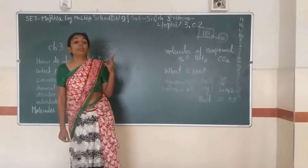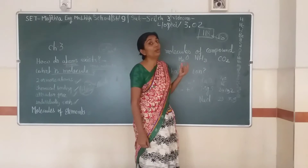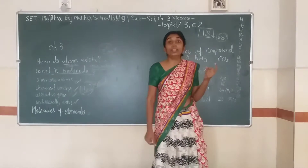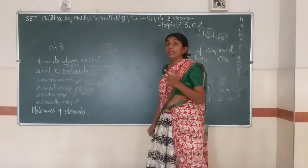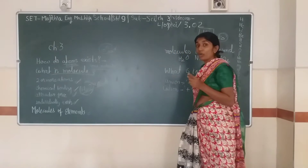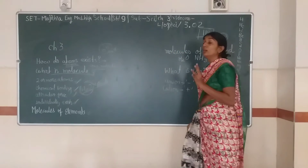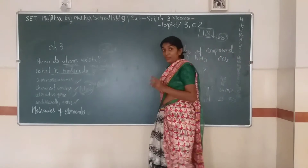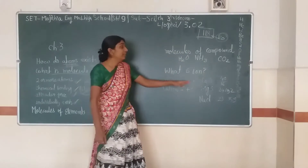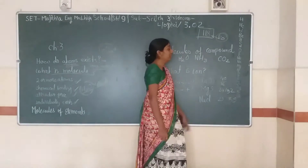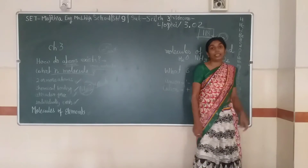The 20 elements are: 1) Hydrogen, 2) Helium, 3) Lithium, 4) Beryllium, 5) Boron, 6) Carbon, 7) Nitrogen, 8) Oxygen, 9) Fluorine, 10) Neon, 11) Sodium, 12) Magnesium, 13) Aluminium, 14) Silicon or Phosphorus, 15) Sulphur, 16) Chlorine, 17) Argon.